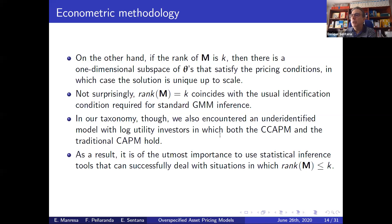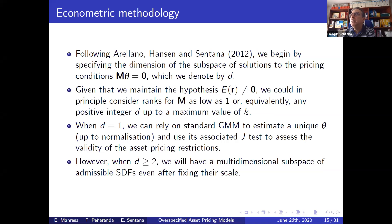Under-identification is going to occur when the rank of the matrix M is strictly less than k. We borrow from a paper with Arianna and Hansen, where we specify the rank of the matrix M. The rank could be as low as one, assuming the test assets have different risk premia, and it can go all the way to k. Rank k plus one means the model is rejected.